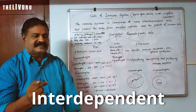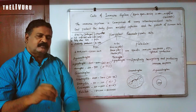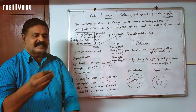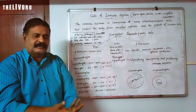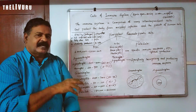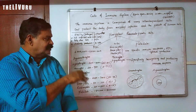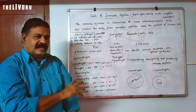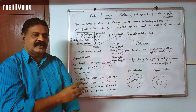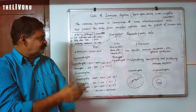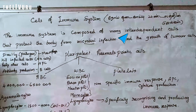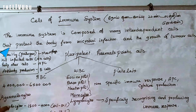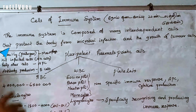These are interdependent cells. All these cells have immunity and work together. You can get the help of these cells so that all of them together provide immune protection.